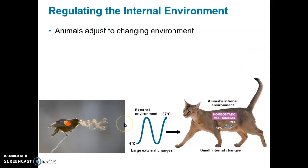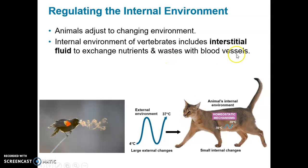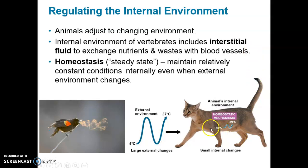Animals can adjust to changes in the external environment. The internal environment within organisms — especially vertebrates, things with backbones — includes the interstitial fluid that allows for the exchange of nutrients and wastes with blood vessels. Homeostasis means steady state: the ability of these organisms to maintain a relatively constant internal condition or environment even if the external environment changes.